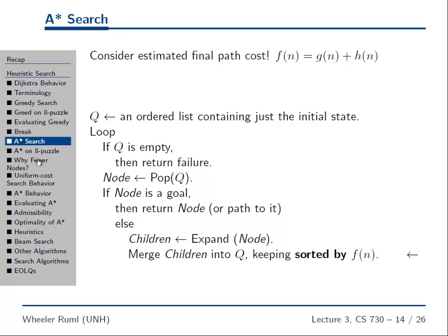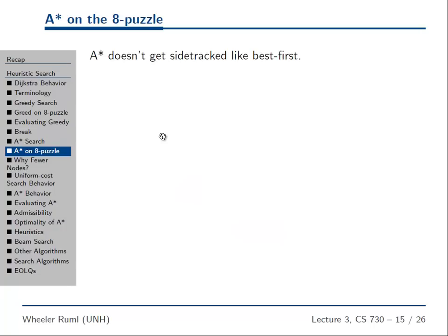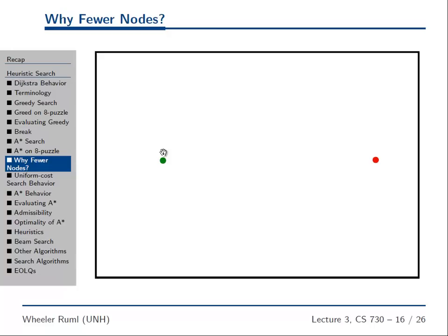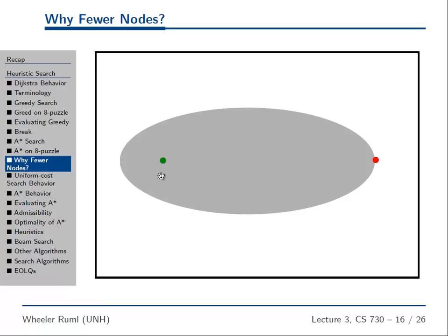How does this actually work? Why would we expect A* to expand fewer nodes than Dijkstra? We have the intuition that it's important to consider h, but how does it work in practice? Well, in our schematic scenario searching from the green node to the red node, the nodes expanded by A* end up looking much more focused — which is a huge win. We're not expanding everything within a distance of f* from the start. A* is able to ignore nodes up here and down here exactly because of the heuristic function.